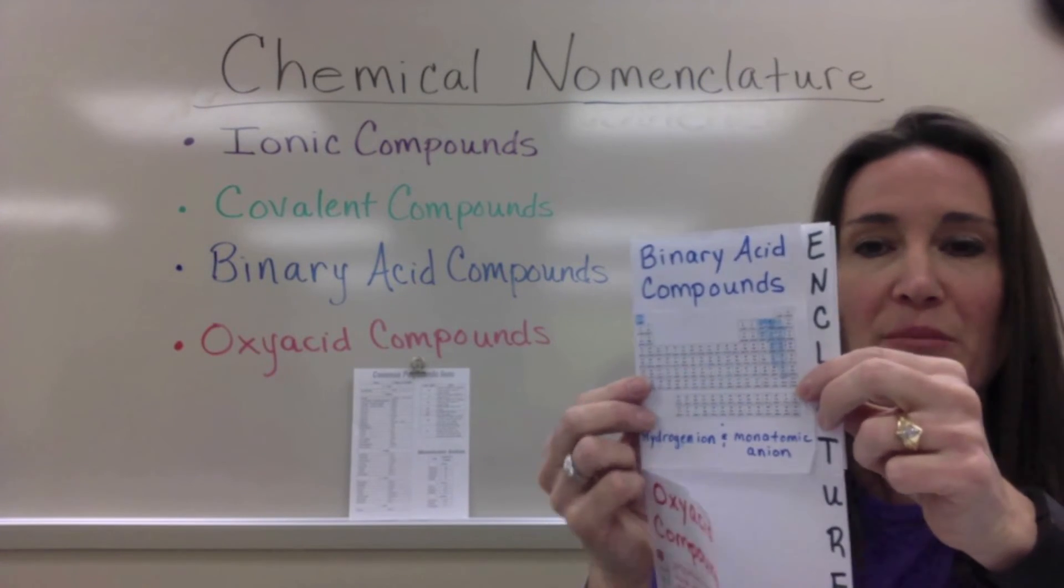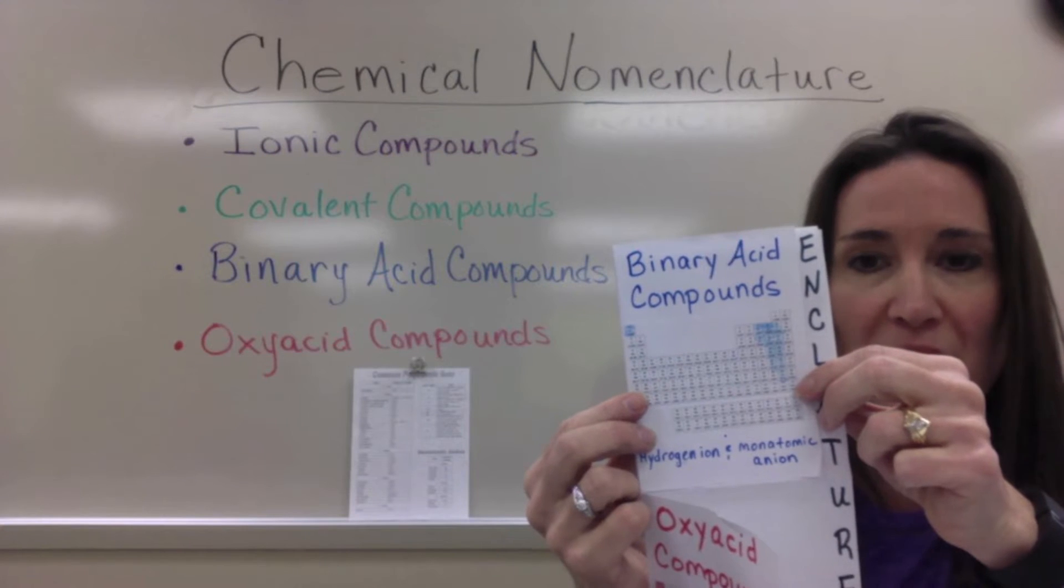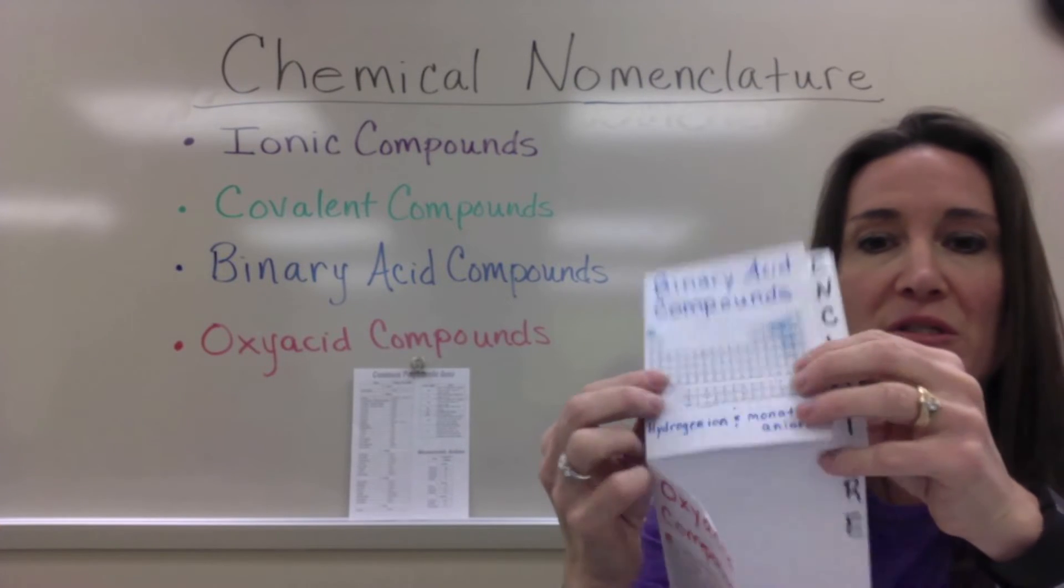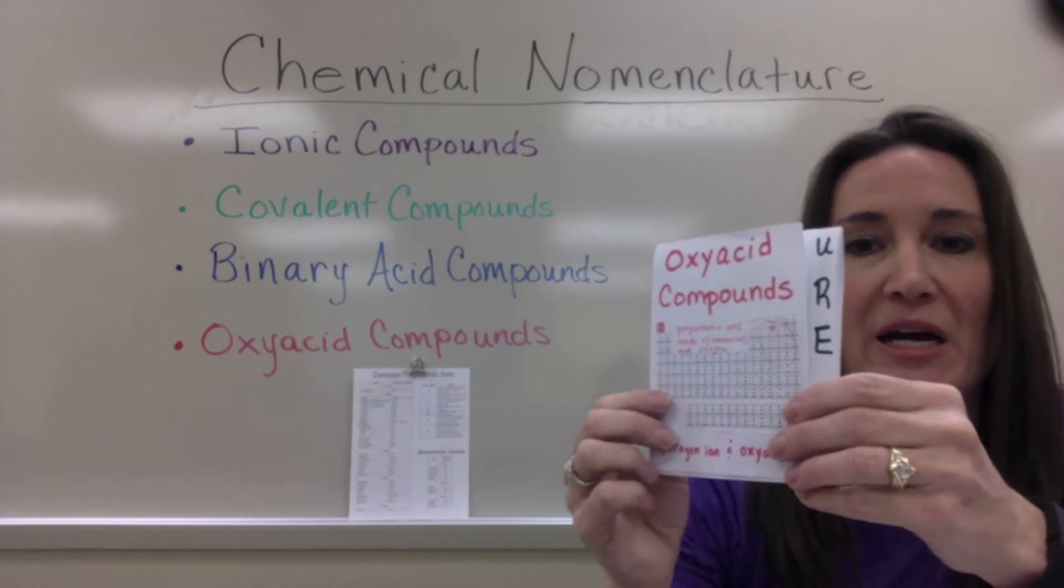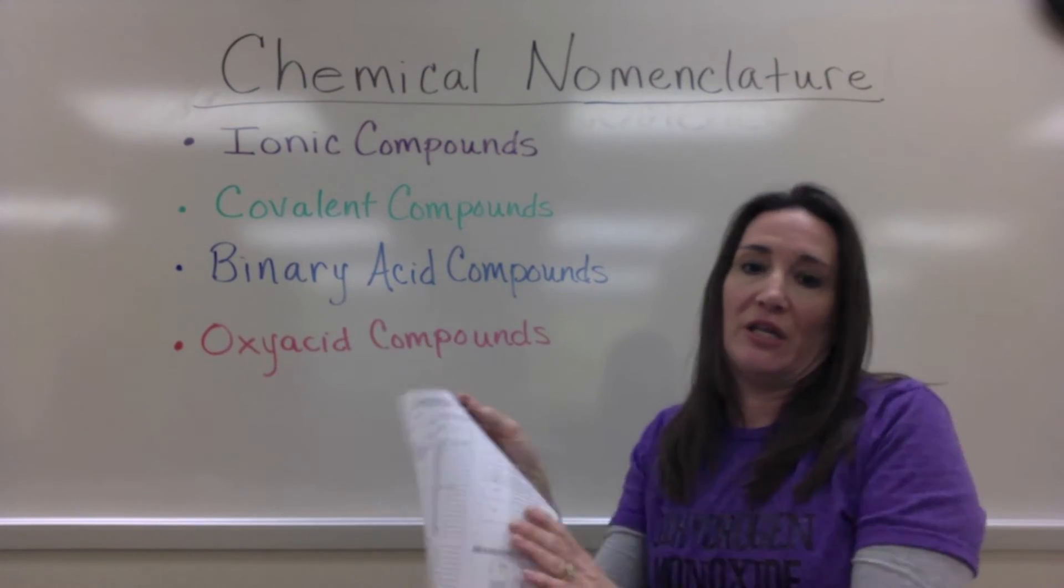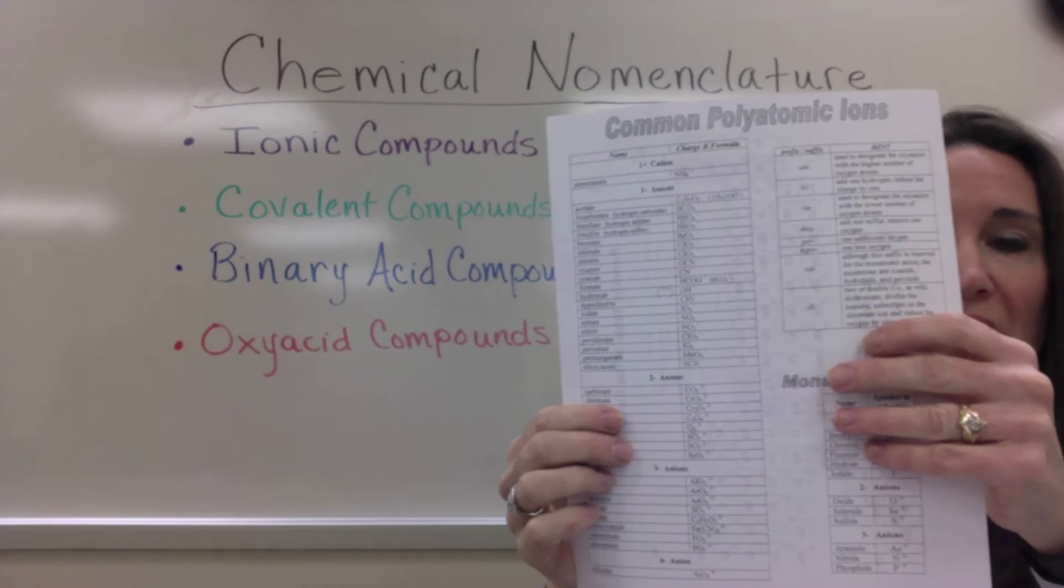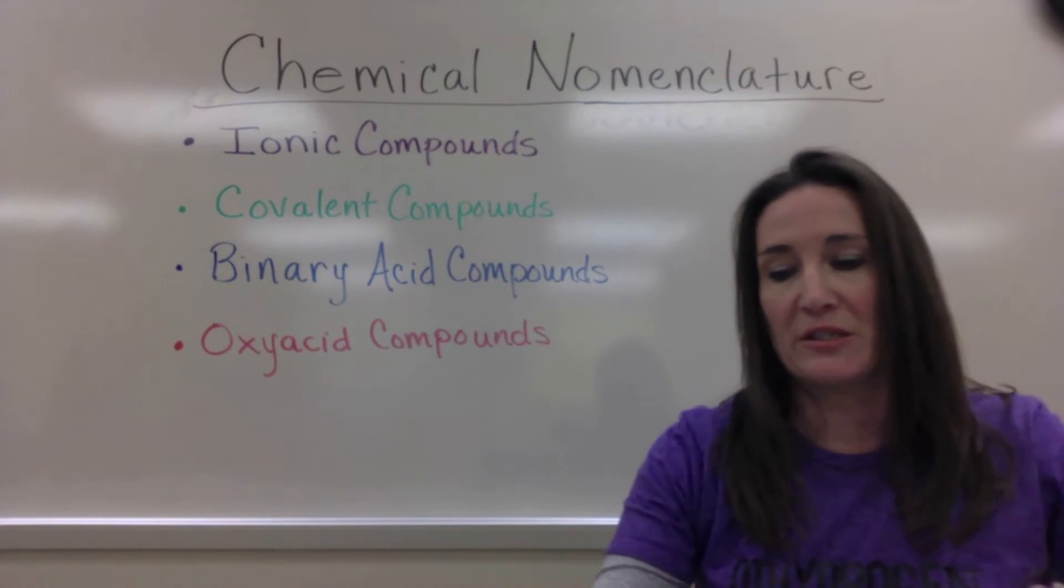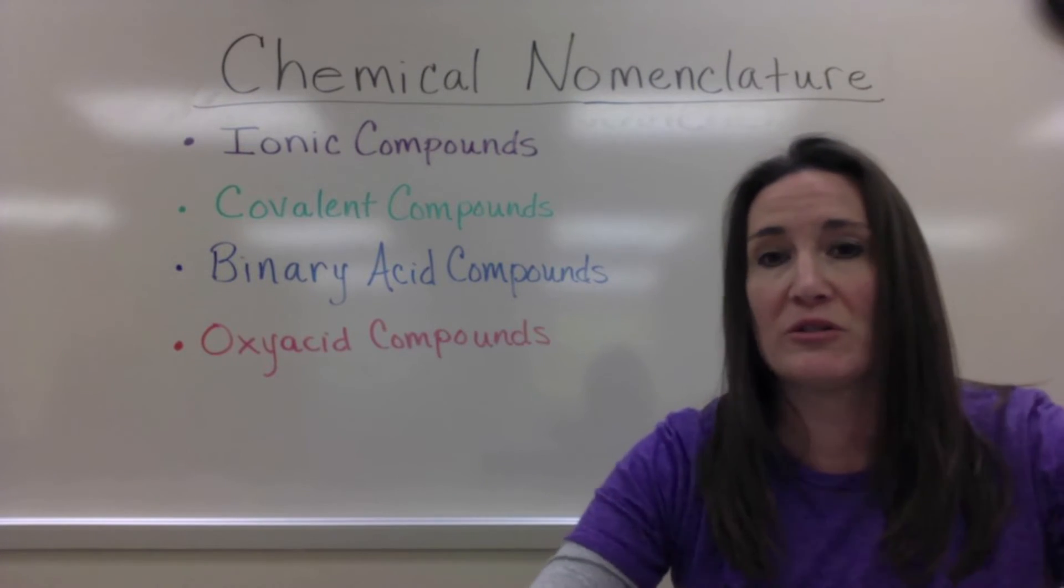Hydrogen ions and monatomic nonmetal ions make binary acid compounds. And any polyatomic ion with hydrogen makes an oxyacid compound. So you're also going to need a list of polyatomic ions or have this memorized. Polyatomic ions can be part of ionic also.